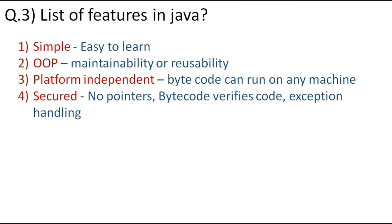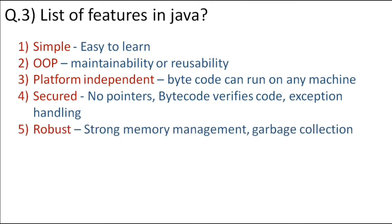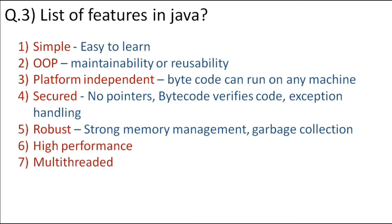Java also has strong exception handling. It is more robust because it has strong memory management and automatic garbage collection — once objects are unused, they are deleted automatically by Java, freeing up memory. And because of exception handling, Java is more robust. Other features include high performance, multi-threaded, and dynamic behavior, which you can also mention as features of Java.